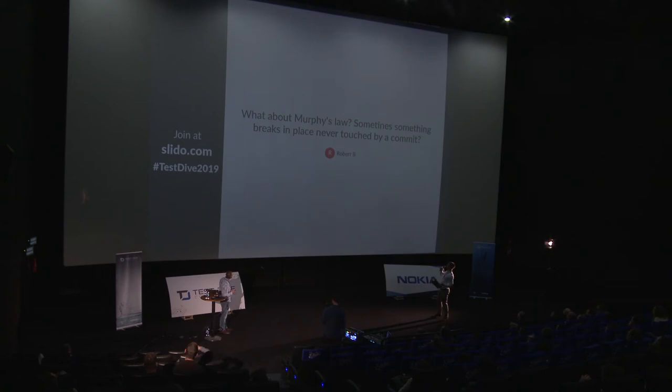Robert asks: what about Murphy's Law — sometimes something breaks in a place never touched by a commit? Yes, that will cause problems. But on the other hand, this tool can give you information about which tests are unstable without any obvious reason. So the tool may actually help you predict which tests are not reliable.